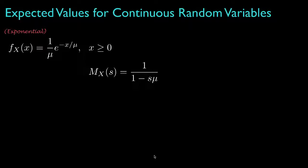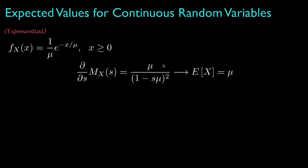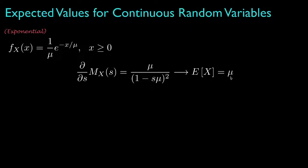Provided the convergence condition is satisfied, the moment generating function evaluates to one over one minus s times mu. The first derivative is mu over one minus s times mu, quantity squared, so that when we set s equal to zero the expected value equals mu, as expected. The second derivative is two times mu squared over one minus s times mu, quantity cubed, giving the second moment as two times mu squared.